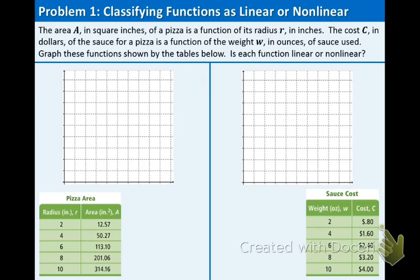In example one, we have two different graphs that we're going to be working with. We need to figure out if they're linear or nonlinear. The area A in square inches of a pizza is a function of its radius R in inches. The cost C in dollars of the sauce for a pizza is a function of the weight W in ounces of sauce used. Graph the functions shown by the tables below. Is each function linear or nonlinear?